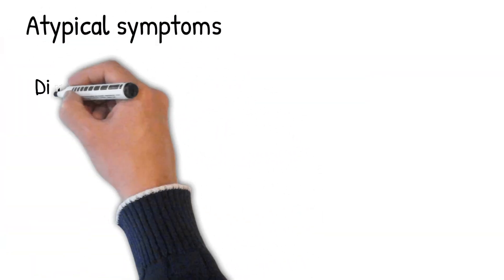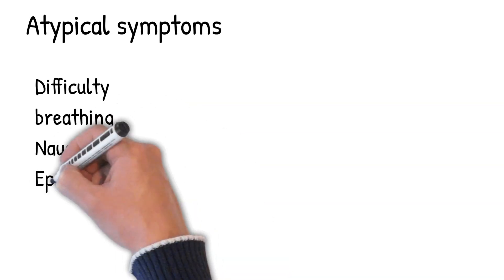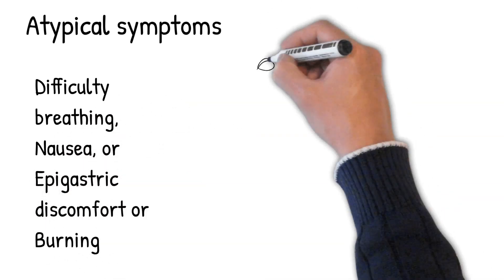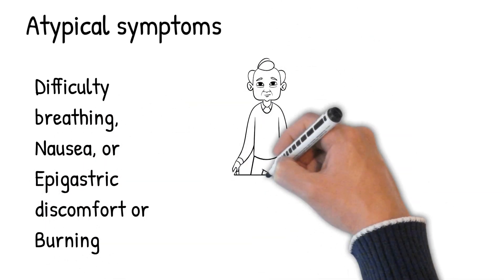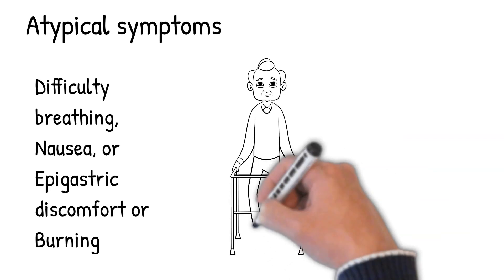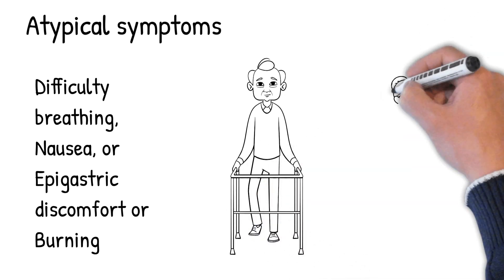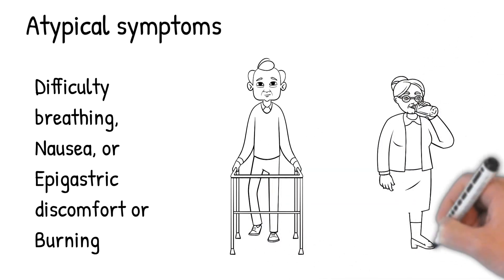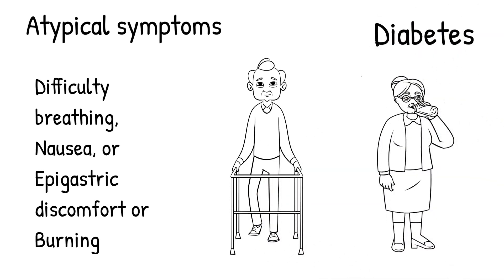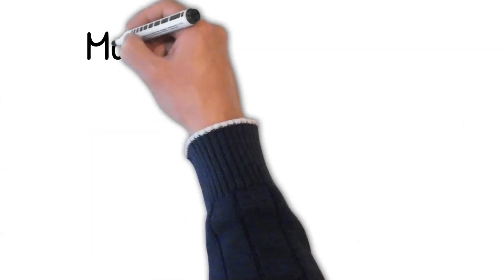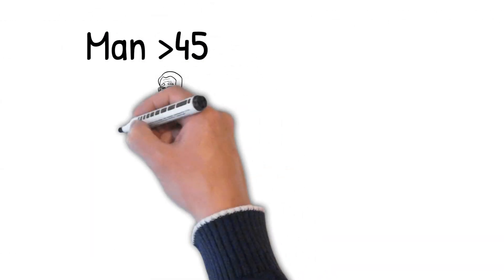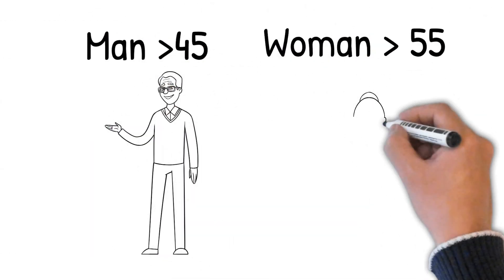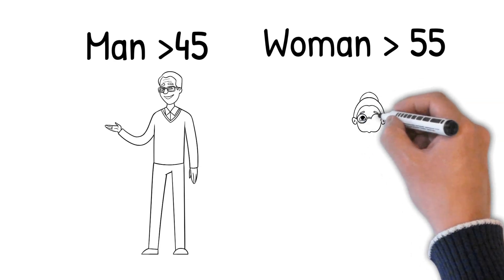Some people present with atypical symptoms including difficulty breathing, nausea, or epigastric discomfort or burning. These atypical symptoms are more common in older people, women, and those with diabetes. Angina is most common in middle-aged and older men, while women are usually affected after menopause.